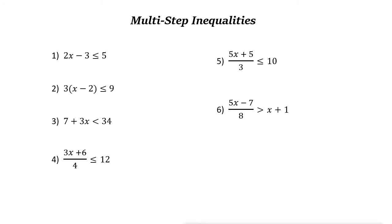Multi-step inequalities. To solve a multi-step inequality, combine like terms on one side of the inequality, bring variables to one side by adding and subtracting, isolate the variable, simplify using the inverse of addition and subtraction, and sometimes you need to simplify further by using the inverse of multiplication and division. At the end of the process, when you find the value or values for the variable, plug in some values into the original inequality to check your answer.